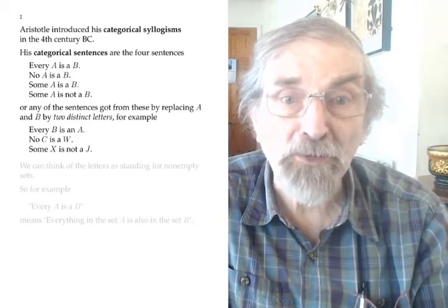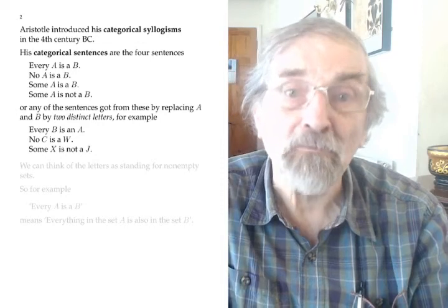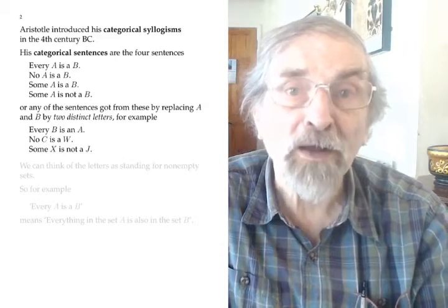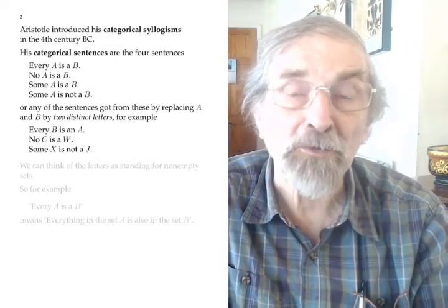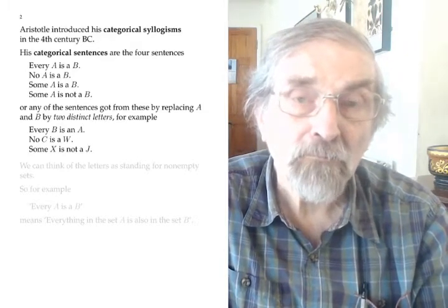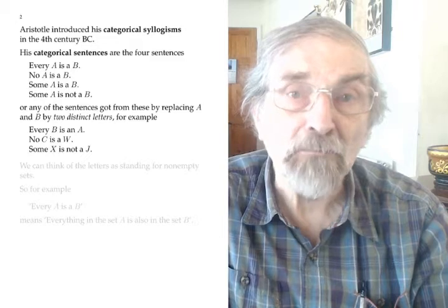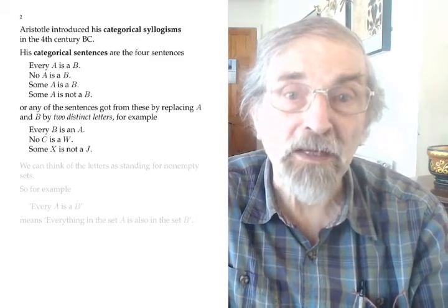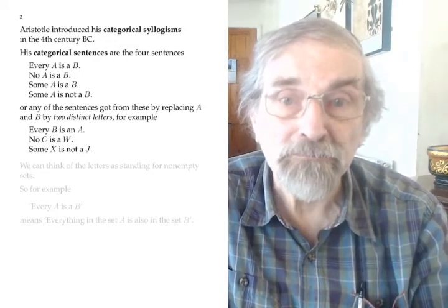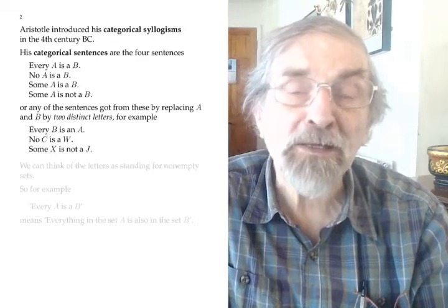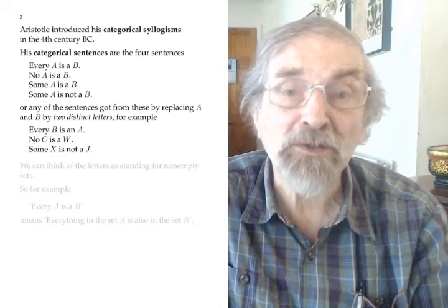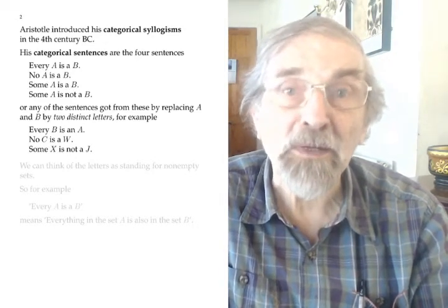Aristotle produced his logic in the 4th century BC in Greek. The part of his logic that we'll be concerned with uses four kinds of sentence, translated into English: 'Every A is a B,' 'No A is a B,' 'Some A is a B,' and 'Some A is not a B.' You're allowed to replace A and B by any two distinct letters, but you can't have the same letter twice, like 'Every M is an M.'